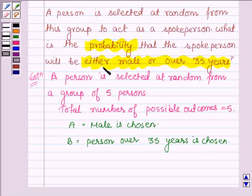So according to the question we have to find either male or over 35 years. That is, we have to find probability of A or B.